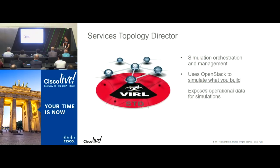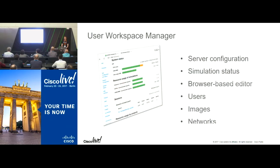In terms of the VIRL system itself, OpenStack sits at the bottom running the virtual machines. Above that is the core piece — the Services Topology Director — whose main feature is the interface between the low-level OpenStack simulation and the higher-level tools. It presents an API that the user interface uses, or that can be directly interacted with by the user. We've also got the user workspace management piece, providing a browser-based interface for server configuration tasks. Rather than interacting at the low level through Linux, it provides a high-level interface for server administration, starting and stopping nodes, starting and stopping interfaces, and setting link parameters — all through a web browser.